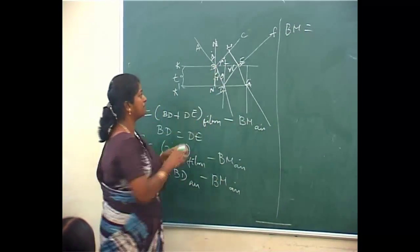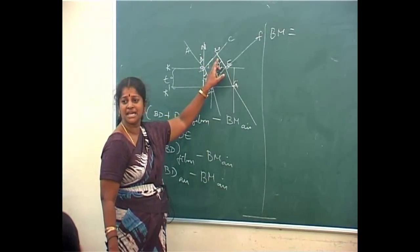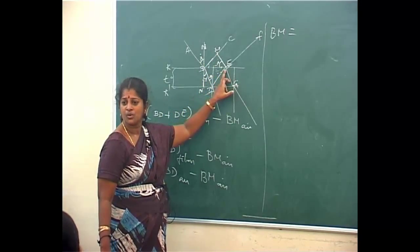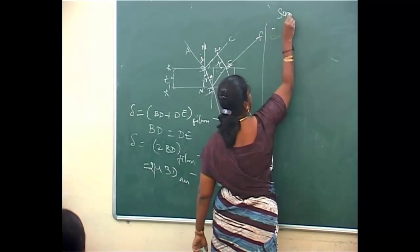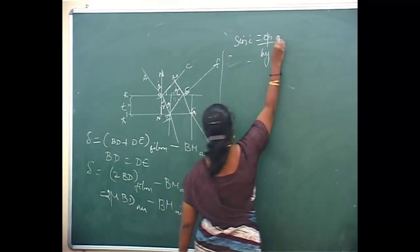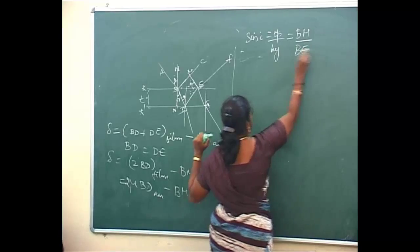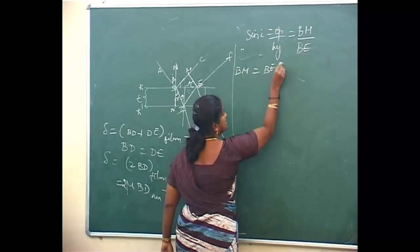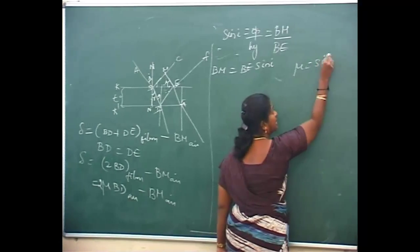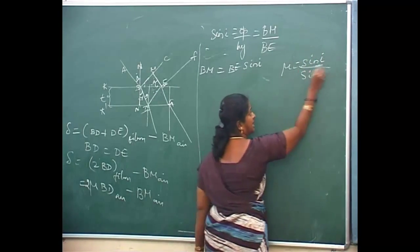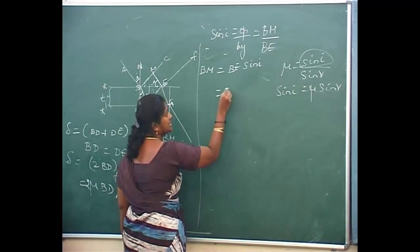This is BM. This is angle I. BM is the opposite side to the angle of incidence. So I will take sin I — sin I gives me opposite by hypotenuse. Opposite side is BM, hypotenuse side is BE. So my BM will be equal to BE sin I. Now, I know mu is equal to sin I by sin R, so from that sin I is equal to mu sin R. I will substitute this here for sin I, that is mu sin R. So this will be BM.